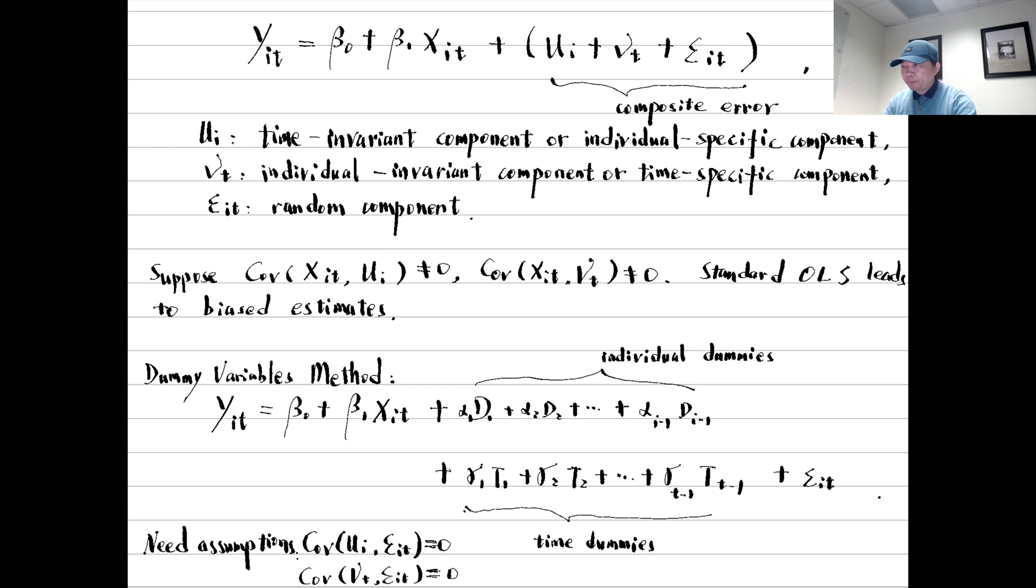The time-invariant component captures the unobserved factors that are individual-specific and do not change over time, such as genetic characteristics and qualities. They are different across individuals, but constant over time for the same individual. It is also called the individual-fixed effect.